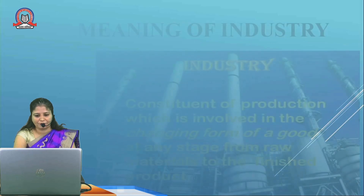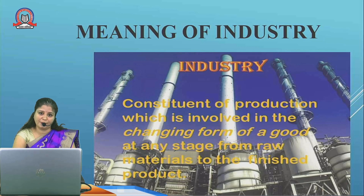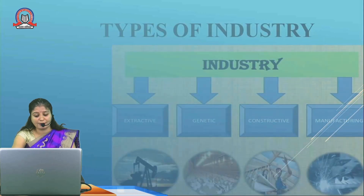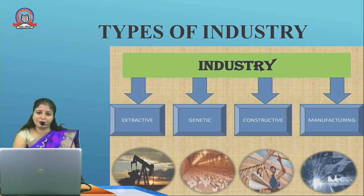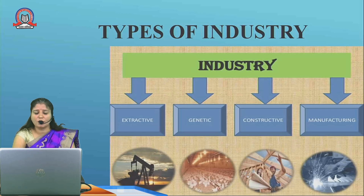Let us elaborate one by one. Industry refers to production, which involves changing the form of a good — changing the shape, form, or color of a product, or converting raw material into finished goods. Extractive industries means extracting something from the earth, for example iron ore industries. Genetic industries means getting something new — for example, poultry farms, nurseries. Constructive industries are based on construction, for example buildings. Manufacturing industry means converting goods into finished goods, for example cotton textile industry and sugarcane industries.